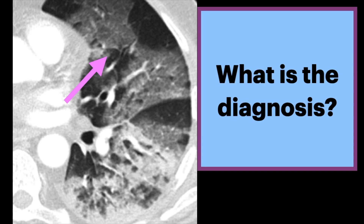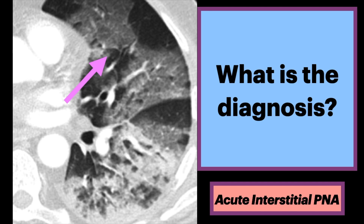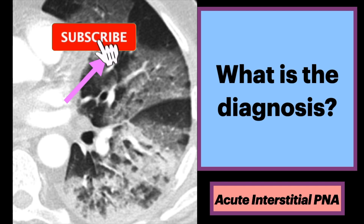What is the diagnosis? We see patchy bilateral ground glass opacities with some sparing of individual lobules, producing a geographic appearance. Dependently, there is dense opacification. These findings can be nonspecific, but in this case the diagnosis was acute interstitial pneumonia, or AIP.